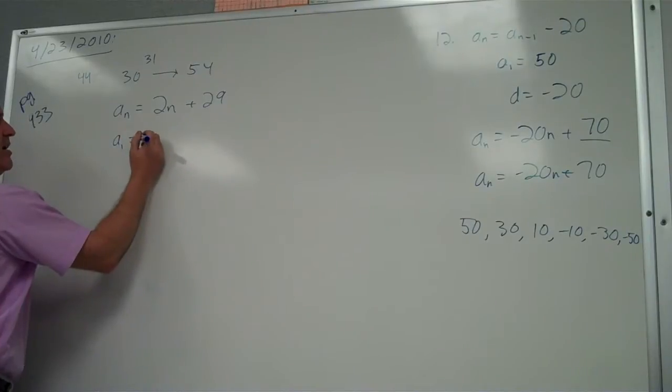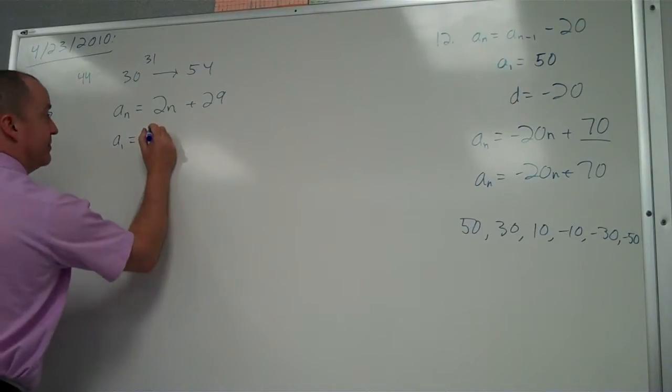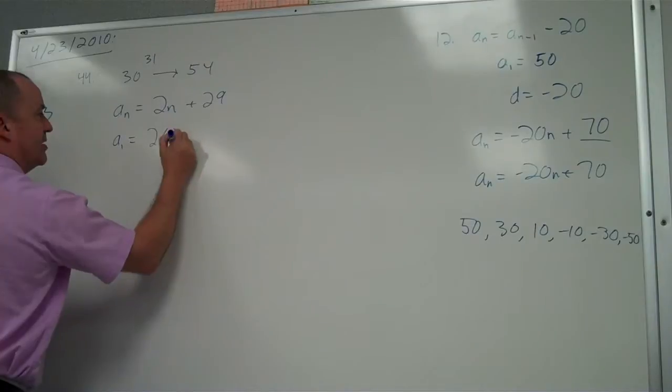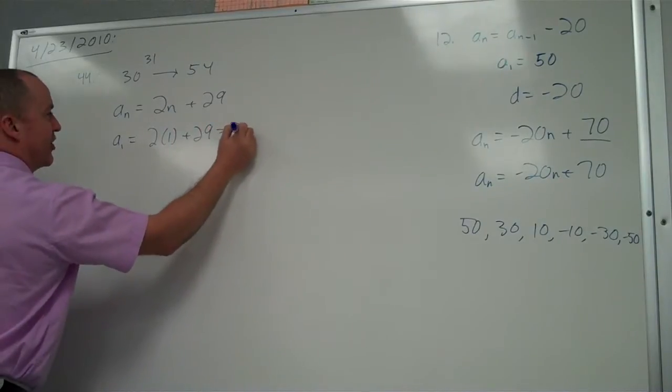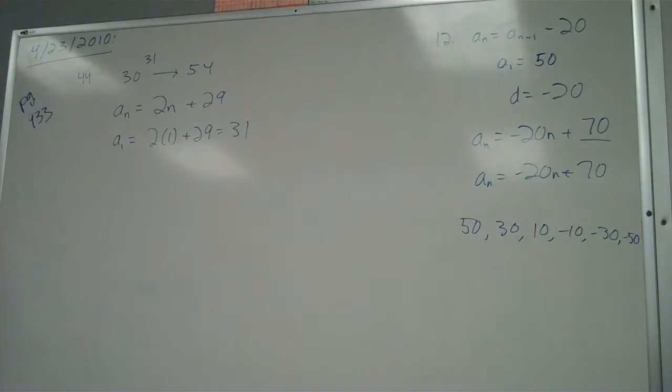This way, a sub 1 is going to be 2 times 1 plus 29 is 31. Does that give me the first odd term between 30 and 54? Yeah.